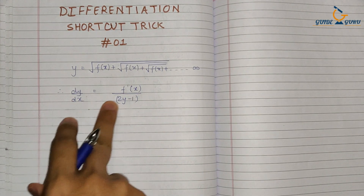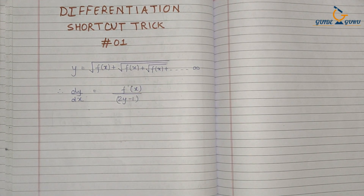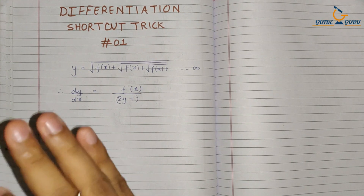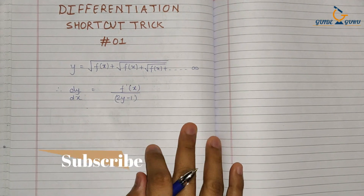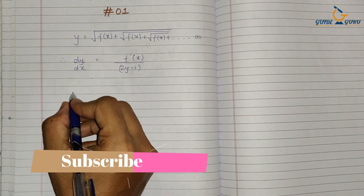The derivative of this function is equal to f'(x) upon 2y minus 1. So the derivative dy/dx will be f'(x) upon (2y minus 1).